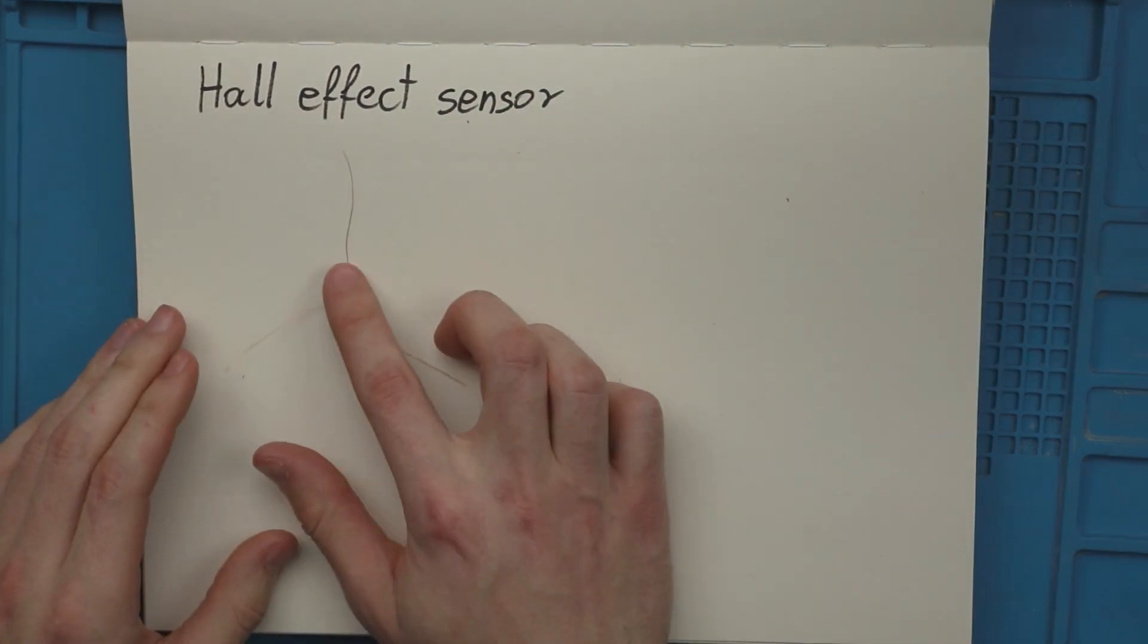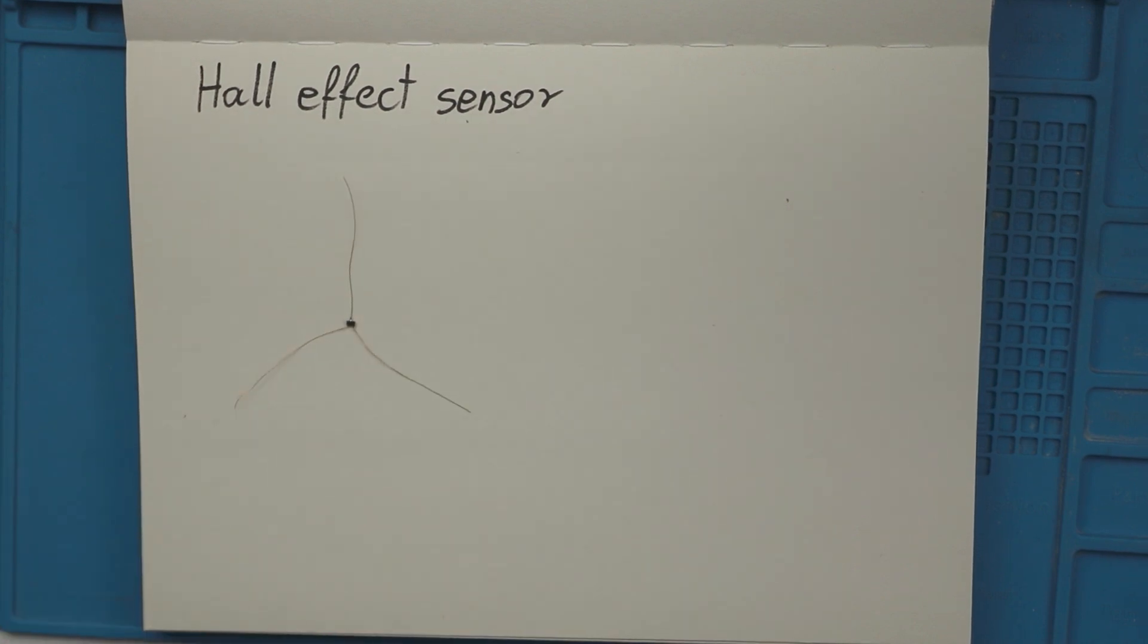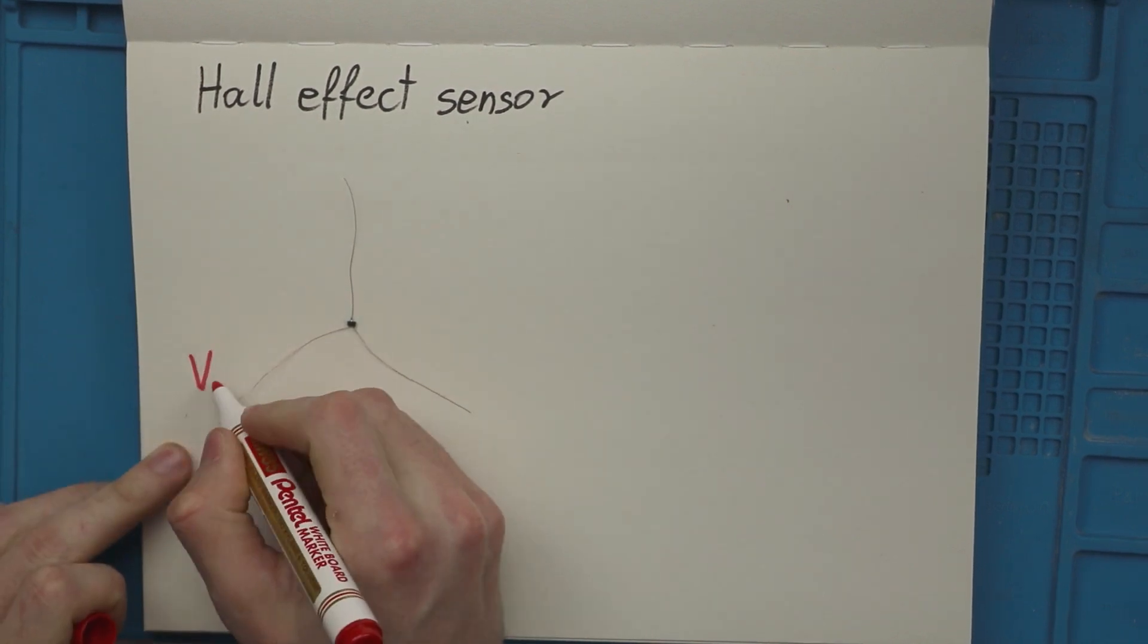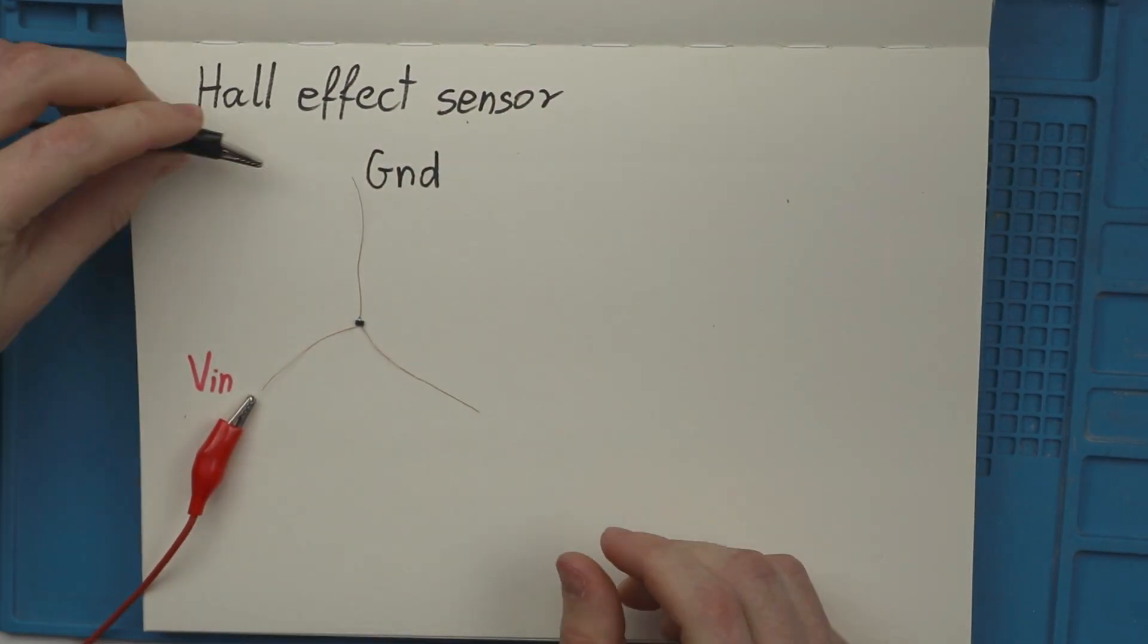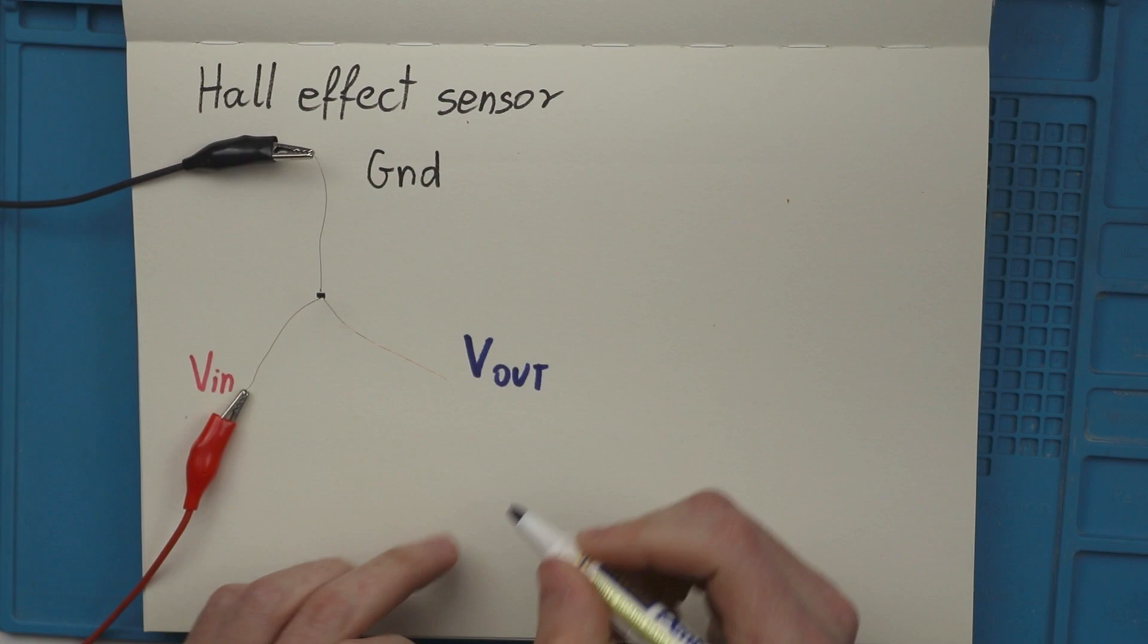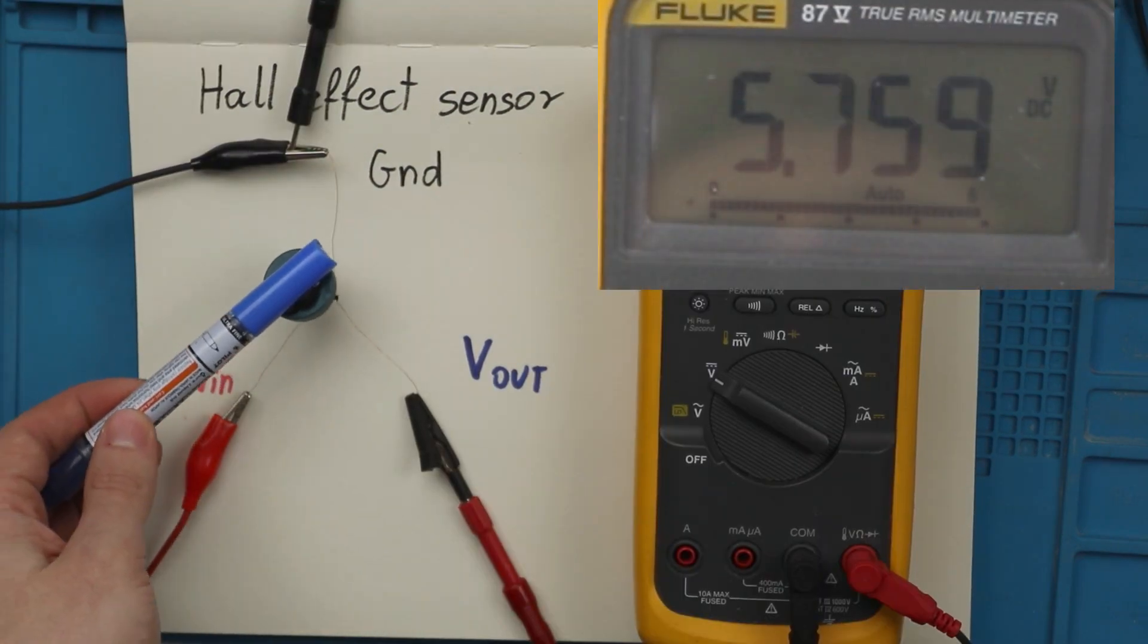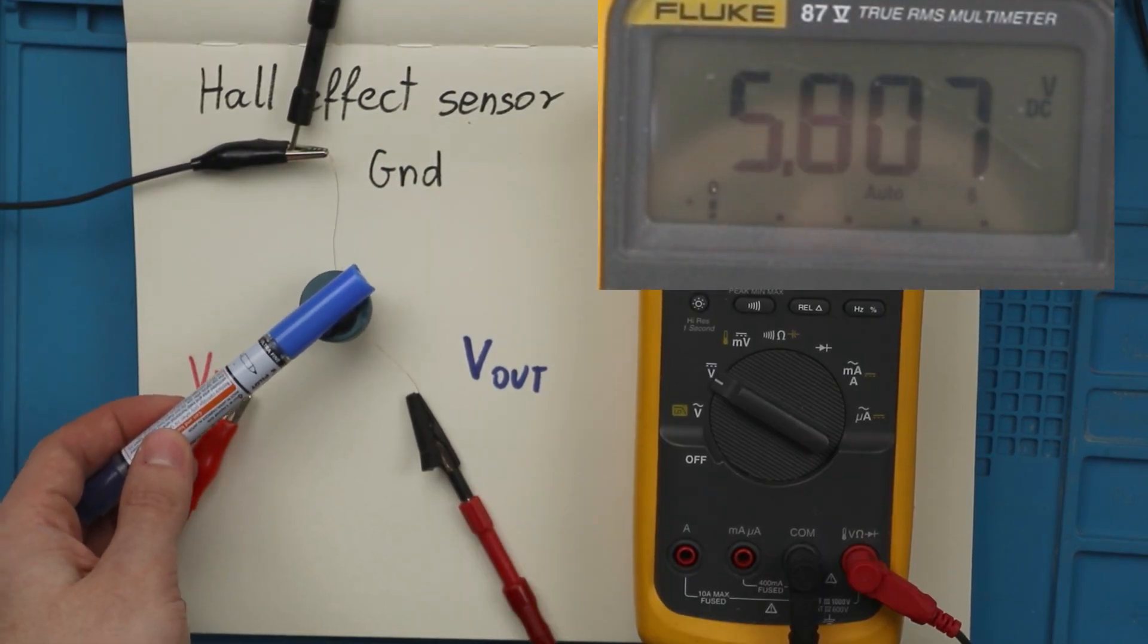A replacement Hall effect sensor can be seen now. As you can see, it has three pins, a voltage in, a ground, and an output. And when we measure the voltage at the output, we can see it changing as we move the magnet around it. So let's replace them in our circuit.